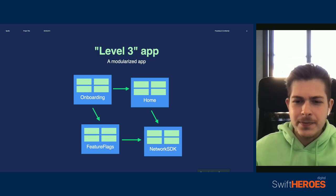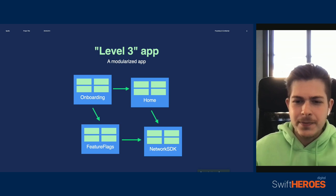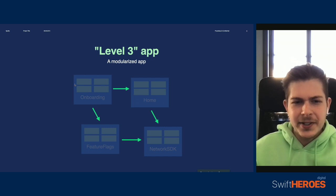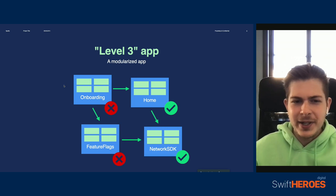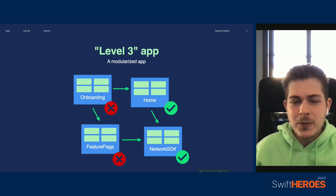If one module for some reason requires access to another one — for example, to push a view controller that is stored in another module — they can simply define a dependency to it. Under this example scenario, if I make a change to the feature flagging module, Xcode is not going to need to recompile the home and networking modules because their dependency graphs have no connection to my changes. This allows Xcode to reuse the same cached modules from the last time they got compiled, which can save us a lot of time.